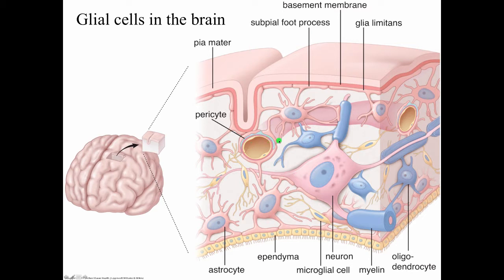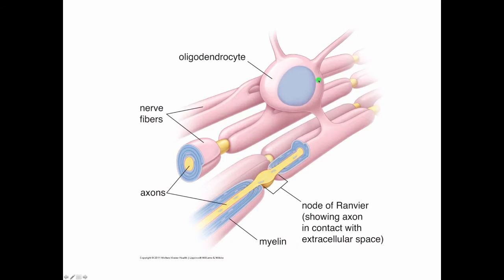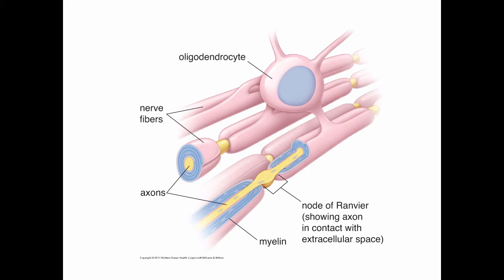Of course, there are blood capillaries in the central nervous system, so you would expect to find cells like pericytes and smooth muscle in the capillary. This cartoon shows that a single oligodendrocyte is wrapping myelin around multiple different axons within the central nervous system, and here the cartoon shows a node of Ranvier — a non-myelinated area within a myelinated axon.